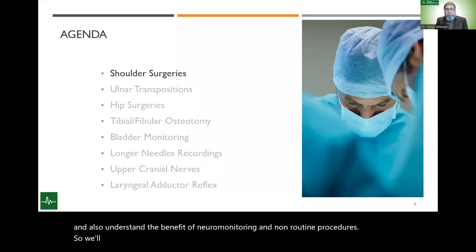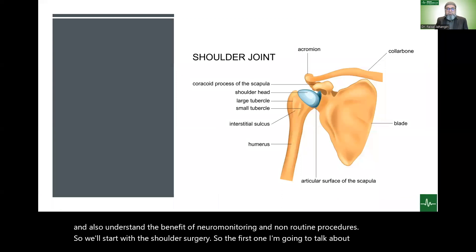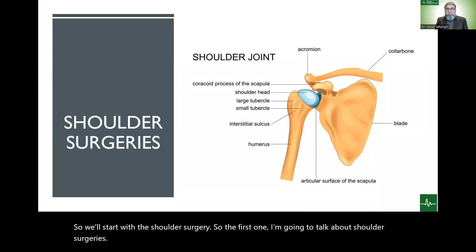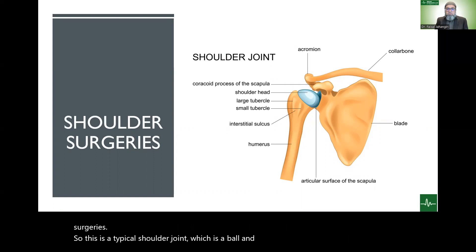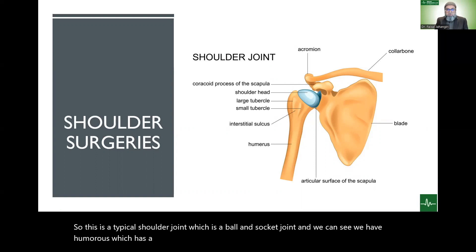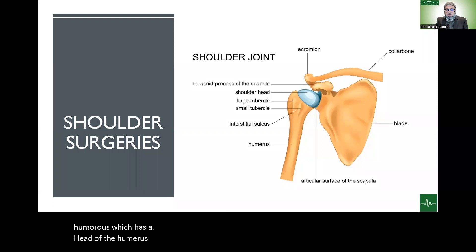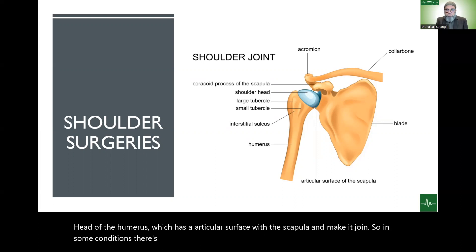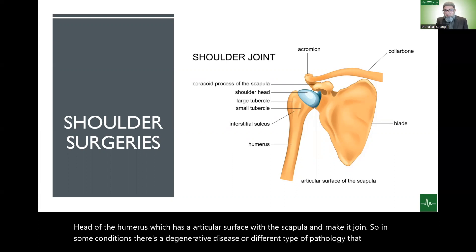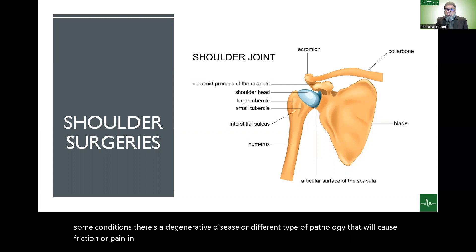We'll start with shoulder surgery. This is a typical shoulder joint, which is a ball and socket joint. We have the humerus, which has a head that forms an articular surface with the scapula to make a joint. In some conditions, degenerative disease or different types of pathology cause friction or pain, or there's a ligament tear that has to be repaired.